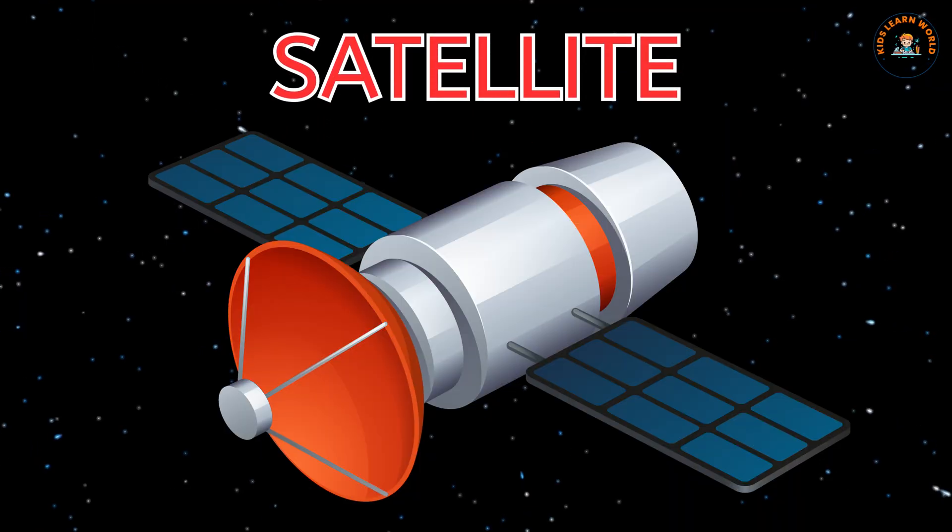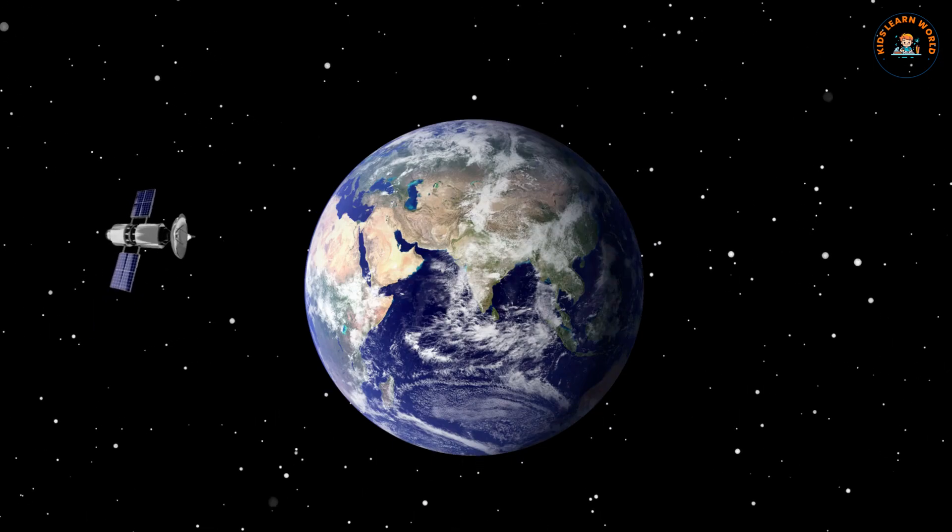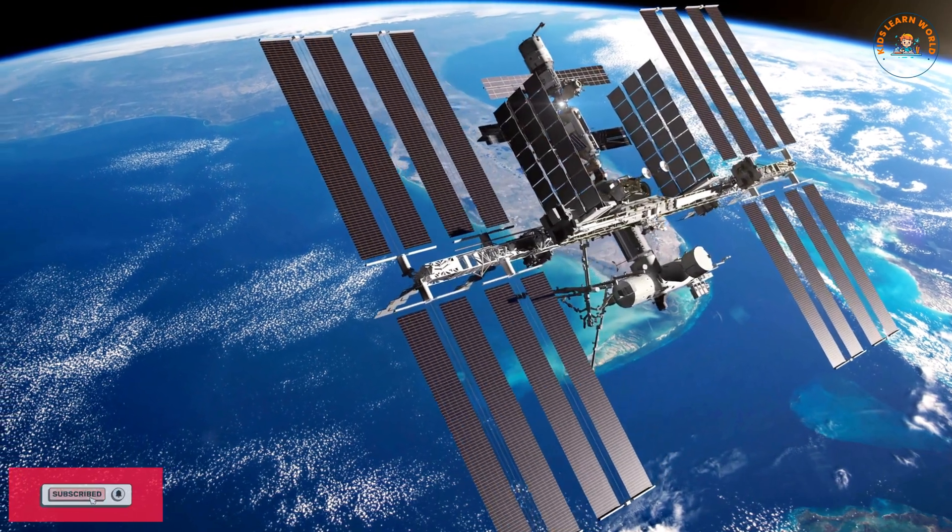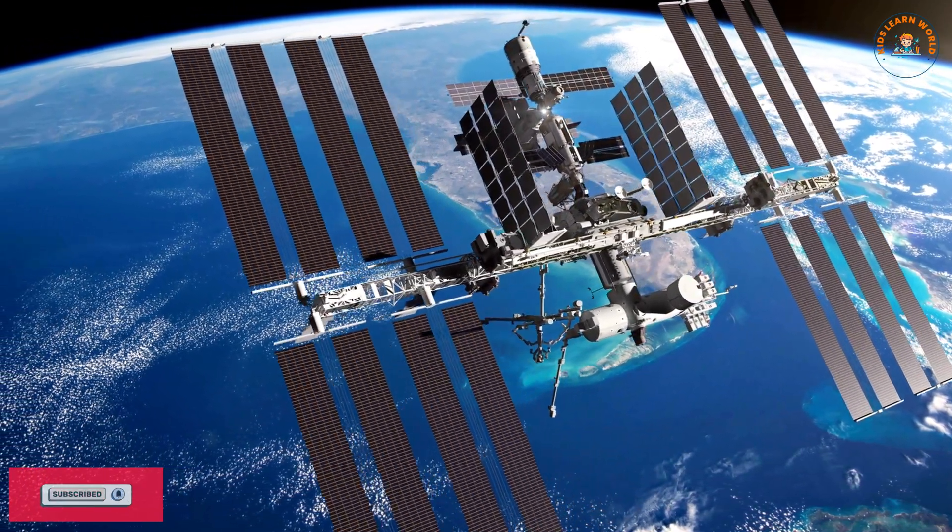This is a satellite. A satellite is a machine that goes around Earth. It flies high in the sky and sends information back to us.